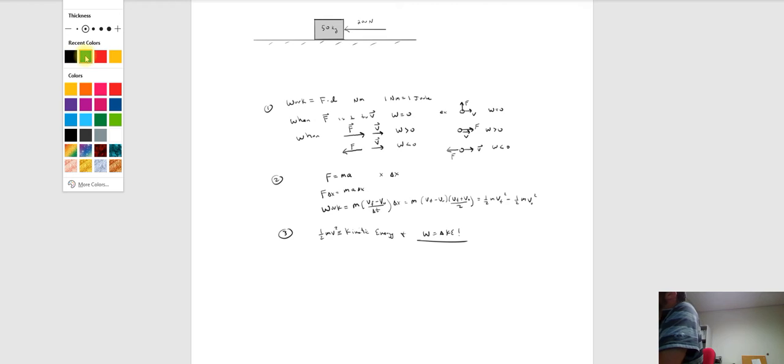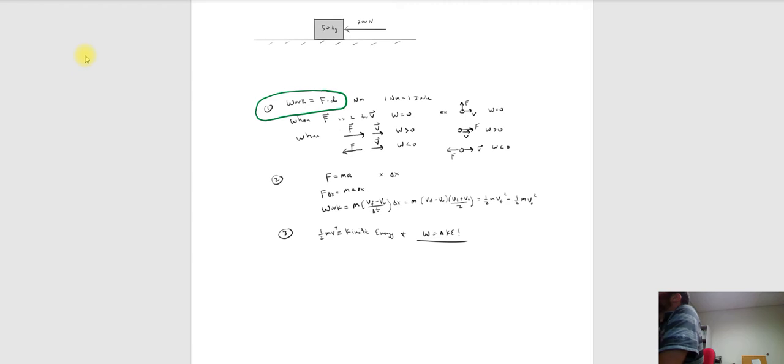Hi folks, and welcome back to Physics with Captain Rod. I'm making this video to describe a quantity called work and how it relates to another quantity called kinetic energy. Work is force times distance. It has units of newton meter, and a newton meter has its own name — one newton meter is called a joule.